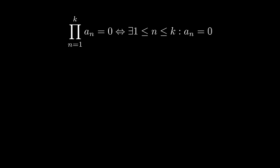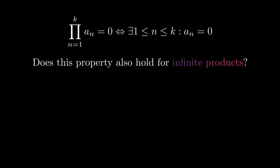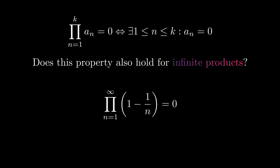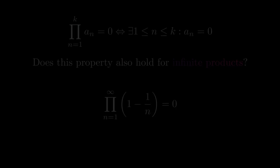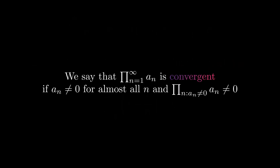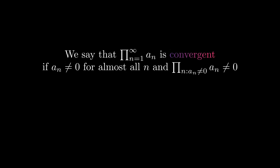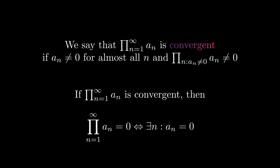For finite products, the product is zero if and only if one of its factors is zero. This is a really useful property, so does it also hold for infinite products? We can easily find counterexamples — for example, if one multiplies one-half over and over again. But there are also examples which are not so easy to see: this product is zero, although the terms tend to one. To restore this property, we say that an infinite product is convergent if almost all factors are non-zero and the product over all non-zero factors is non-zero. With this definition, we are again able to say that if a convergent product is zero, then one of its factors must be zero.